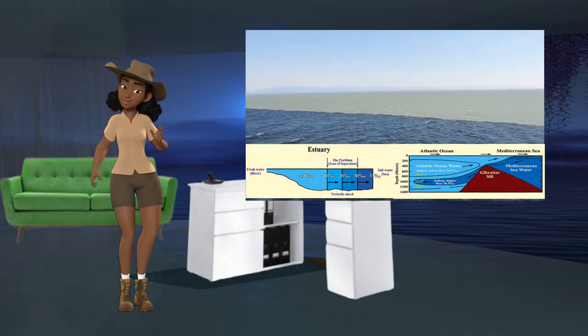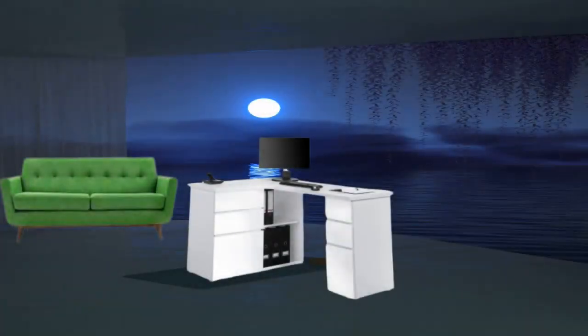Likewise, the human eye cannot see the division of water in estuaries into the three kinds: fresh water, salt water, and the partition zone of separation.